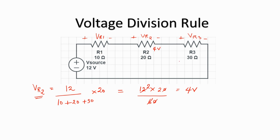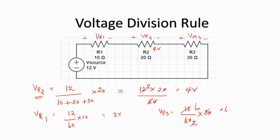Similarly, we can find the drop across Vr1 and Vr3. Vr1 would be 12 divided by 60 into 10, which is 2 volts, and Vr3 would be 12 divided by 60 into 30, which is 6 volts. Adding up all the drops — Vr1 being 2 volts, Vr2 being 4 volts, and Vr3 being 6 volts — it comes to 12 volts. So the 12 volt source is dropped across all three resistors in the ratio of their resistances.